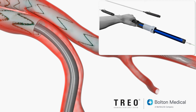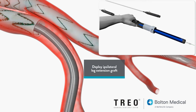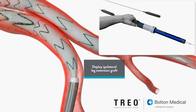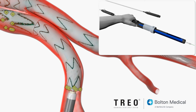To deploy the leg extension stent graft, hold the stationary grip and rotate the turn knob in the direction of the arrow to start initial deployment of the leg extension stent graft. Observe the proximal end of the stent graft as it starts to deploy to ensure the markers are within the overlap zone.